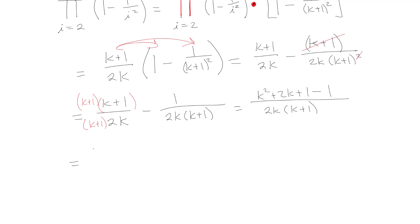I just keep doing math. So I've got k squared plus 2k over (2k times (k plus 1)). Factor out the k. k(k plus 2) over (2k(k plus 1)). Those k's go away. And I've got (k plus 2) over (2(k plus 1)).